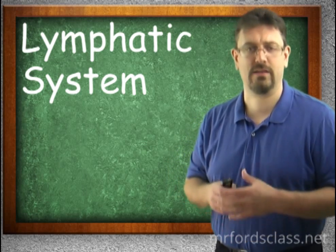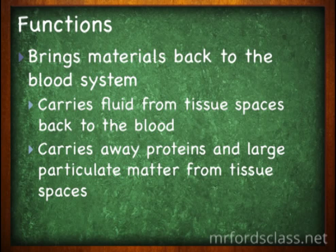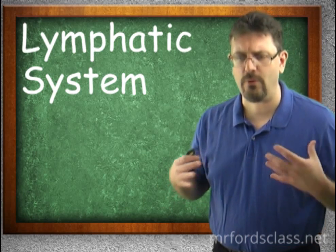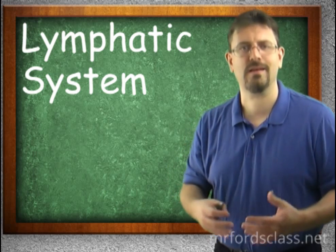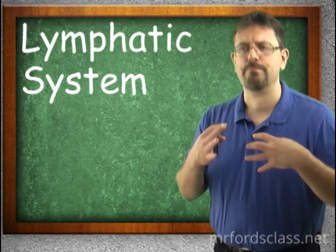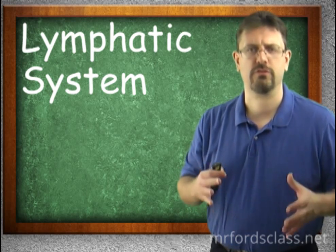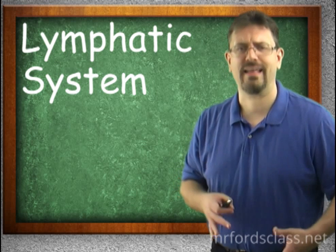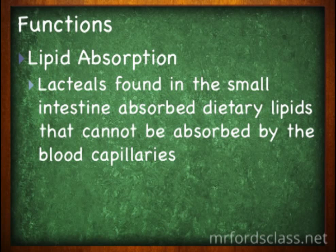The lymphatic system gets the stuff that doesn't make it back into the blood capillaries. It also carries away proteins and large particles that are just too big to enter the blood capillaries. The lymphatic system also has a very important function in the immune system, which is why they're usually tied together. Because the lymphatic system is bringing in all this material from the surrounding tissues, it also wants to make sure it's all clean before it gets back into the bloodstream. Lymph nodes and other structures check incoming materials for things that don't belong — bacteria, viruses, damaged or dying cells. Additionally, in the small intestines, the lymphatic system absorbs dietary lipids that are too big to get through the blood capillaries.